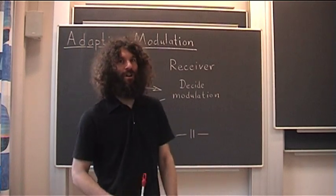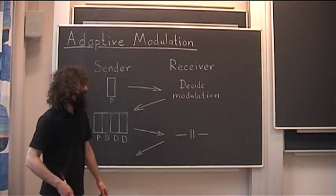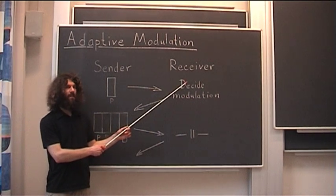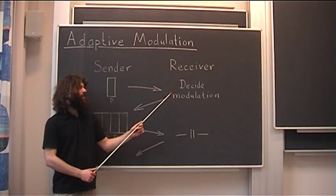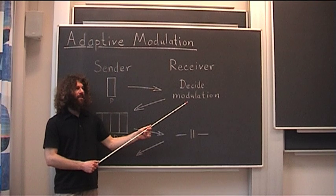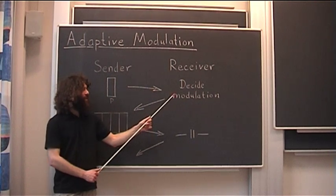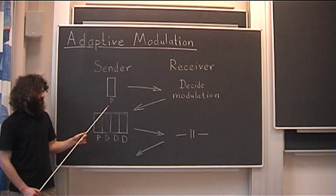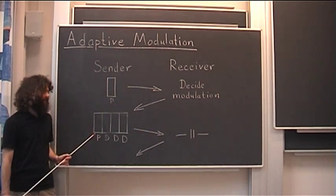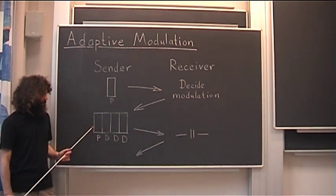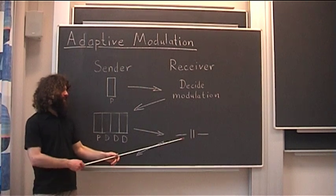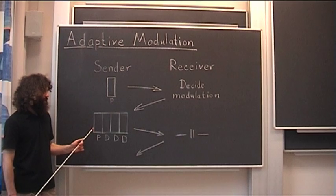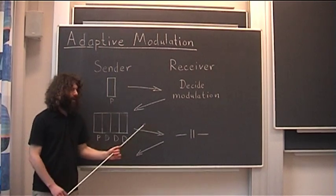The transmission starts with a pilot, which is a known sequence for both the sender and the receiver. The received pilot estimates the channel quality, which is used to design the modulation. This is sent back to the sender, which uses it to modulate the next block of data. All blocks of data are sent to the receiver, and each block starts with a pilot. This process keeps going on and on.